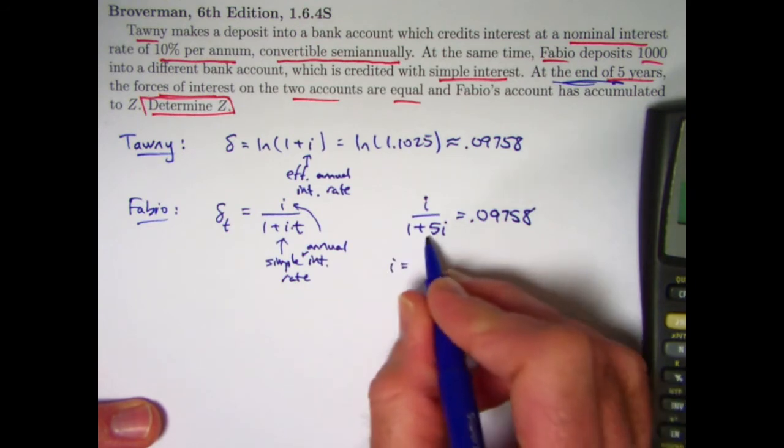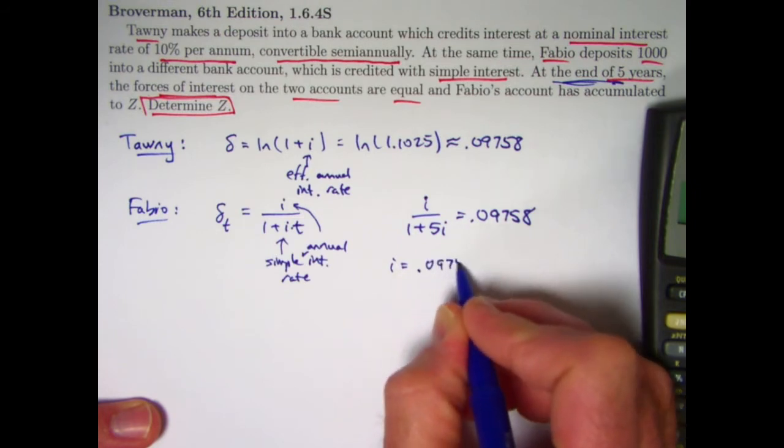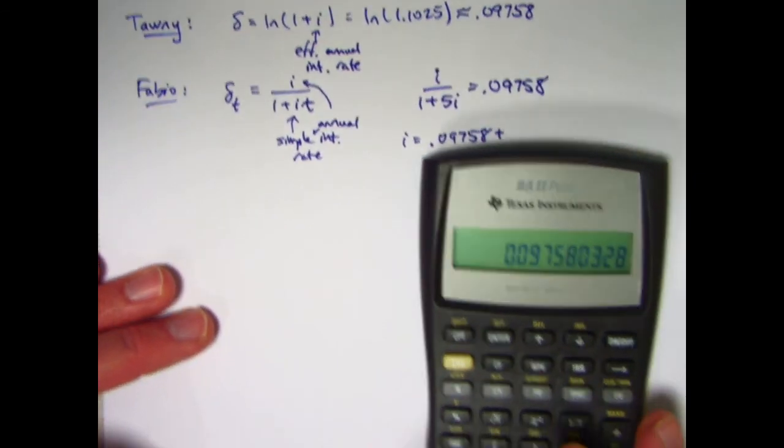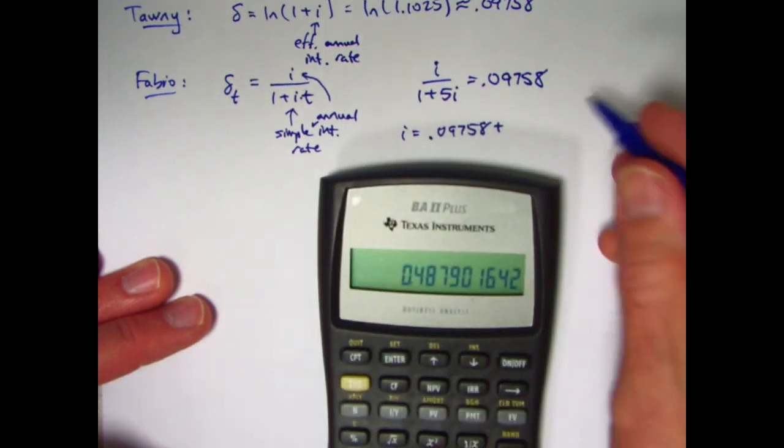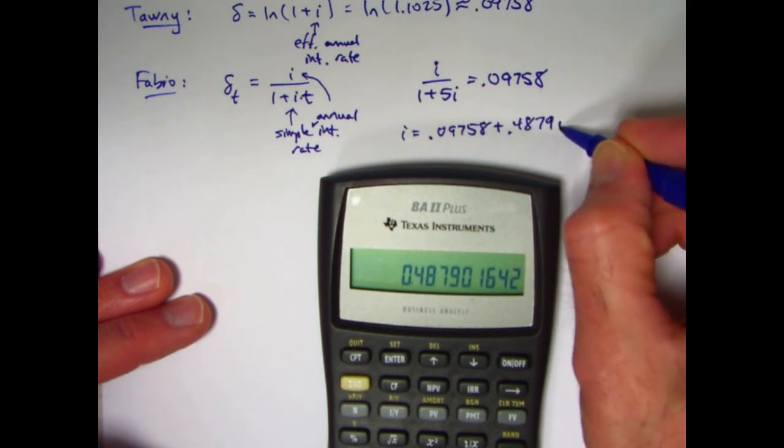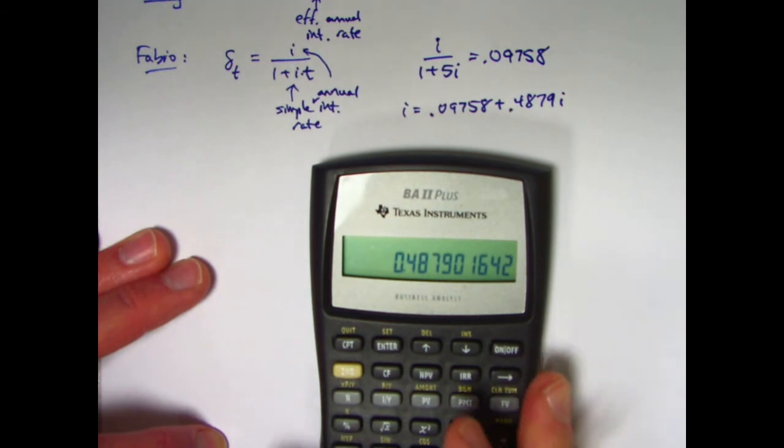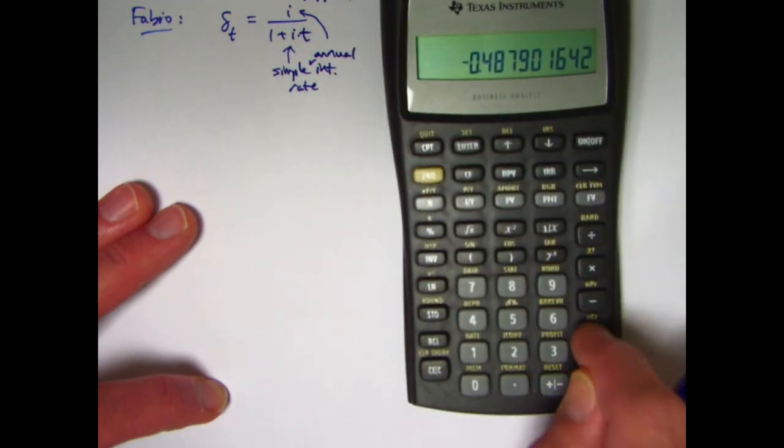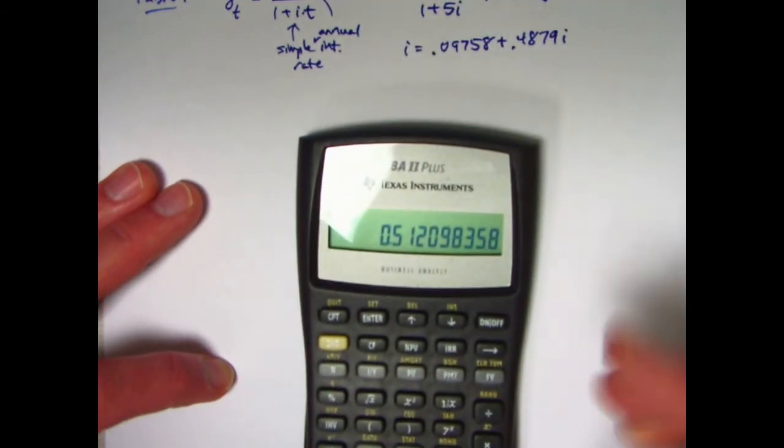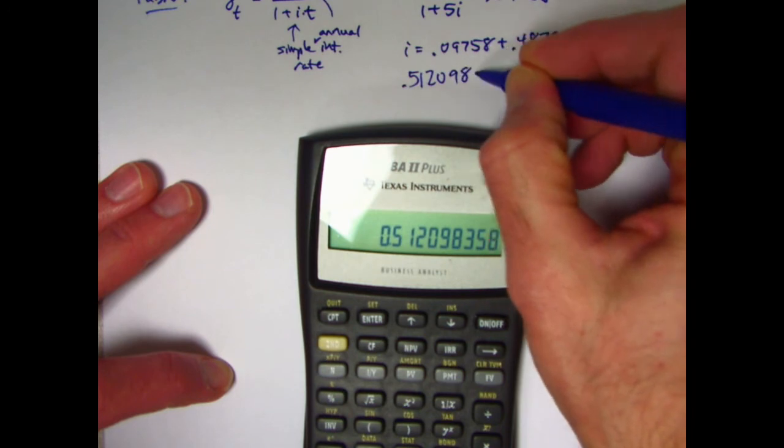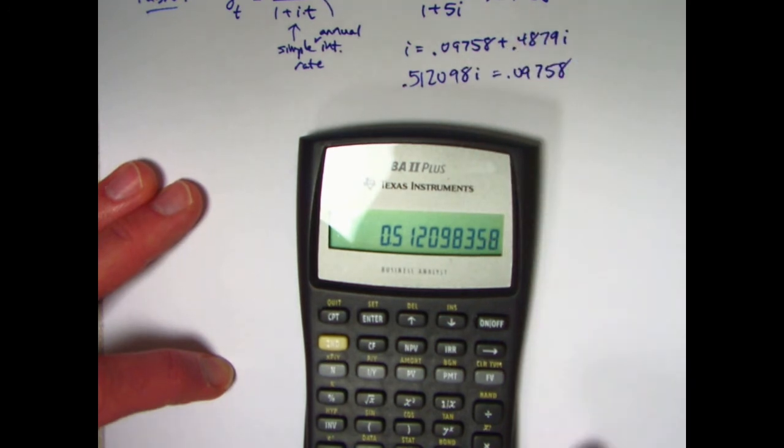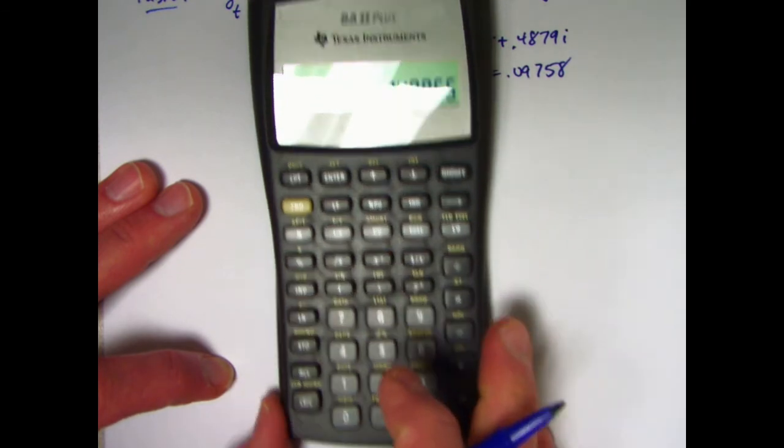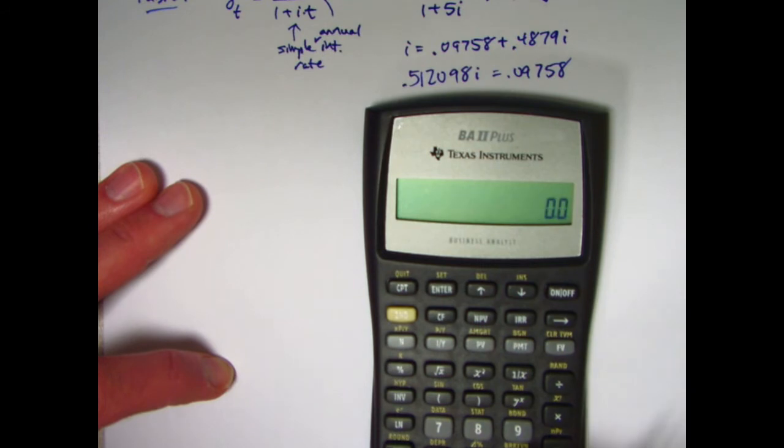You can write I is, I'll multiply both sides by 1 plus 5I, you'll get 0.09758 plus 5I times 0.09758. So I'm going to multiply this by 5 here, gives me 0.4879I. Subtract 0.4879I from both sides to get I isolated on the left side. So I can negate this and add 1 to it to figure out the coefficient of I on the left side to be 0.512098I equals 0.09758. Now divide both sides by 0.512098. On the calculator, I'll take its reciprocal and multiply times 0.09758.